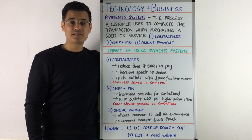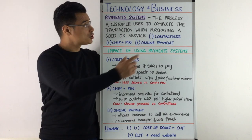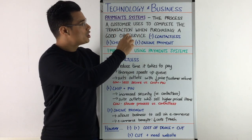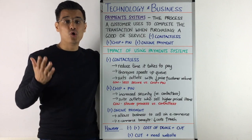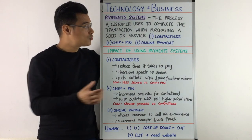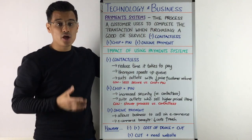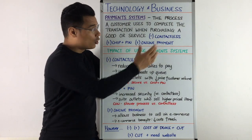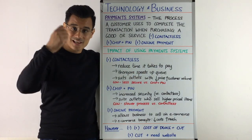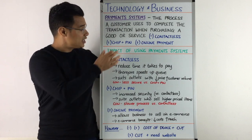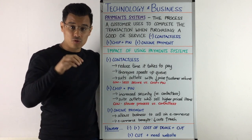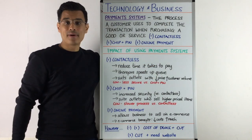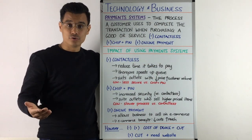Let's have a session on payment systems. The definition: the process a customer uses to complete the transaction when purchasing a good or a service. Common examples would be using contactless, using chip and pin, or using online payments. Contactless is when you touch your card against the machine, chip and pin is the four-digit number you put in on the machine, and online payment is when you pay through a website.